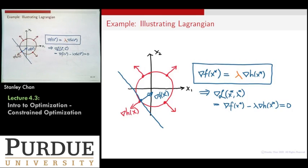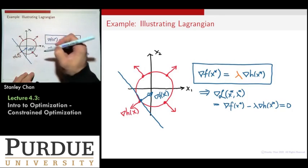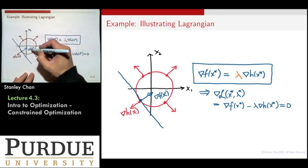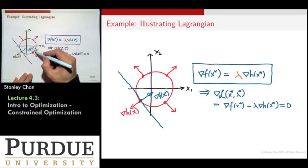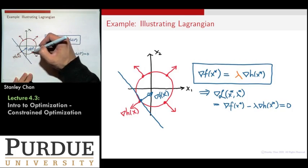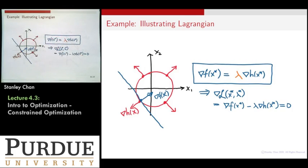Now, if you are at here, if you are looking at this point, your gradient is pointing to here, but then your gradient of f is pointing to here, but then your gradient of h is pointing to another direction. So they are not parallel.